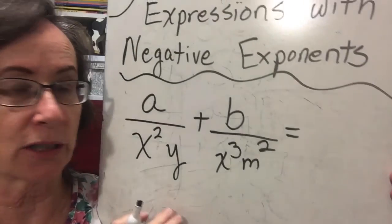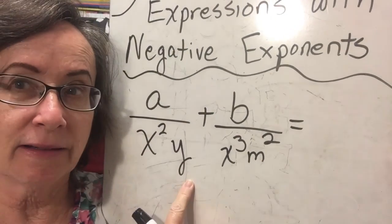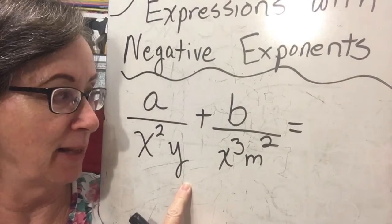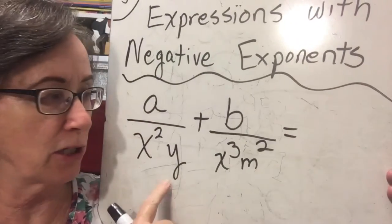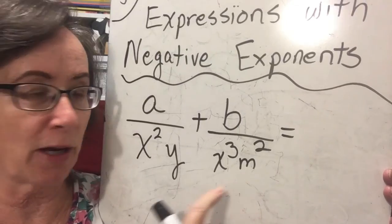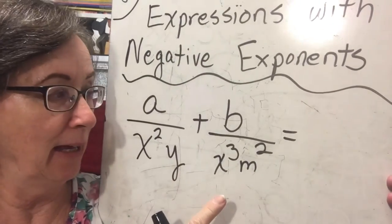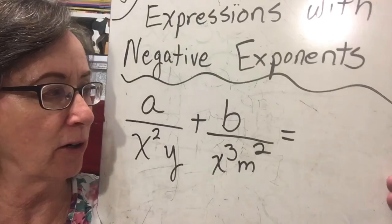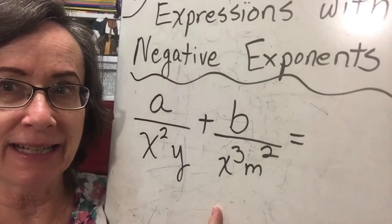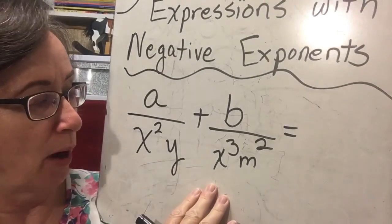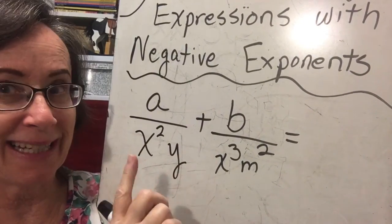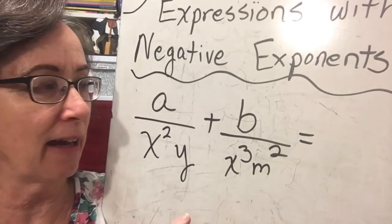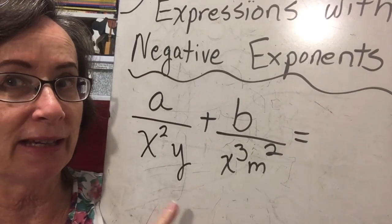Now, we've already worked on fractions like this. So this is a fractional or rational expression, and this is a rational expression. And when we add them, we must get a common denominator. So we've already done this type of problem, but when we do it, we're going to see how we're going to attack the same type of problem with negative exponents.